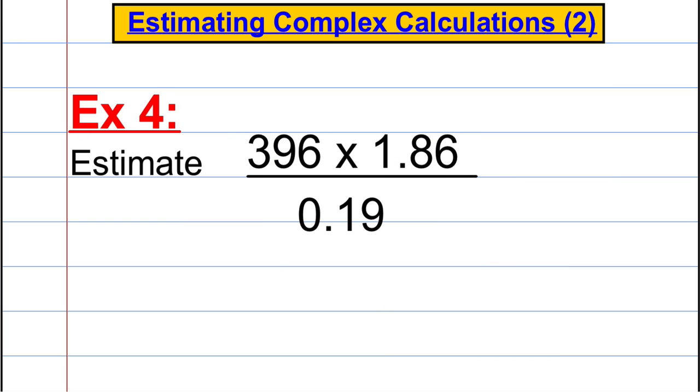Next example, slightly more complicated. The numbers have longer decimals in them and we're divided by a decimal number as well. So we've got that idea that we talked about in example 2 to work through. Let's round everything to the first significant figure. I'm going to highlight the digit that represents the first significant figure.